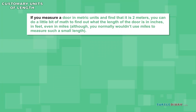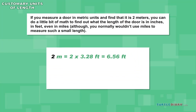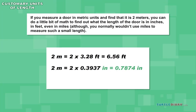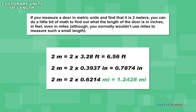Example: If you measure a door in metric units and find that it is 2 meters, you can do a little bit of math to find out what the length of the door is in inches, in feet, even in miles, although you normally wouldn't use miles to measure such a small length. 2 meters equals 2 times 3.28 feet, which equals 6.56 feet. 2 meters equals 2 times 0.3937 inches, which equals 0.7874 inches. 2 meters equals 2 times 0.6214 miles, which equals 1.2428 miles.